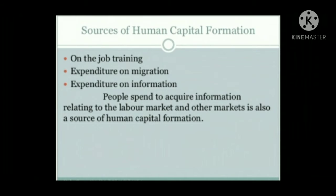Expenditure on migration: people migrate from one place to another in search of jobs that fetch them higher salaries. Unemployed people from rural areas migrate to urban areas in search of jobs. Expenditure on migration is a source of human capital formation as enhanced earnings in the migrated place are more than the increase in cost due to migration. Expenditure on information: expenditure is incurred to acquire information related to labor markets and other markets, including amounts spent on seeking information about educational institutions, their educational standards, and cost of education.